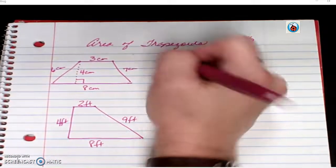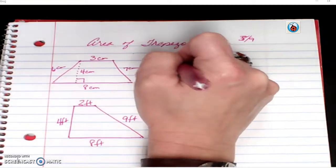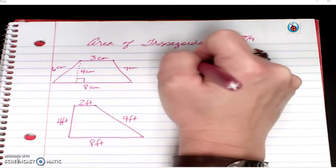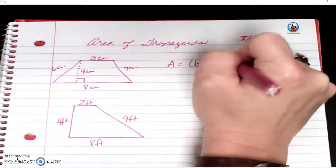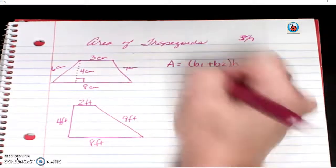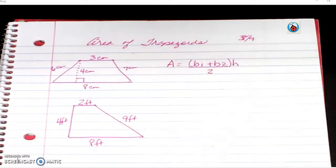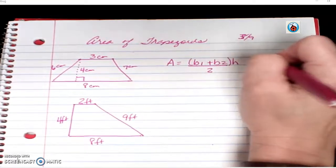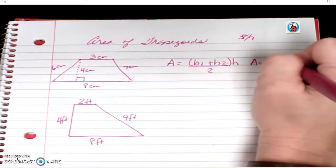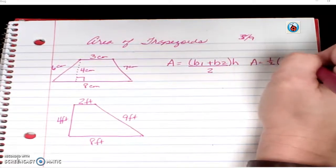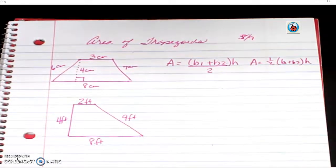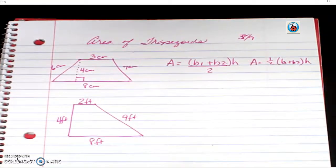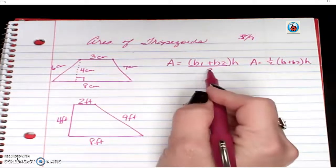So the formula for finding area of a trapezoid, area equals base 1 plus base 2 times height divided by 2. Which means you could also see it as 1 half base 1 plus base 2 times height. It's the same thing, it's just whichever one makes more sense to you when you're doing it. For me, that would be this one.